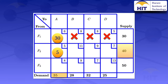So we have to allocate 5 here. When we allocate a 5, the total for column A now brings us to 35, so we have reached the demand for destination A. Since we have reached that demand, we can no longer allocate anything in that column. So I'll cross it out. We now have to move to the next cell, moving to the next column where we have destination B.